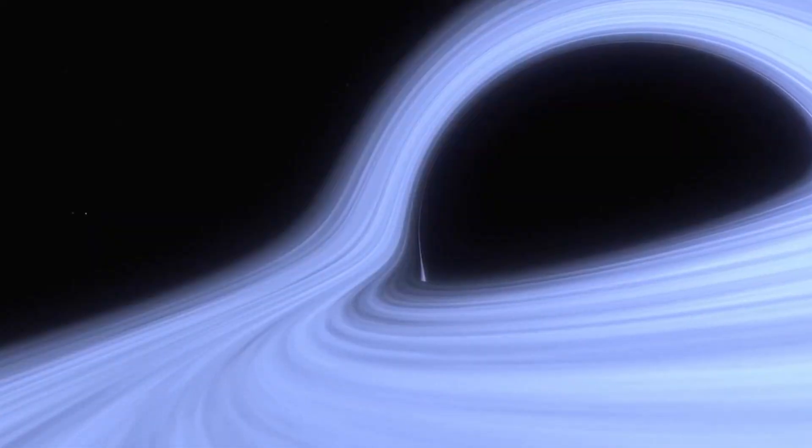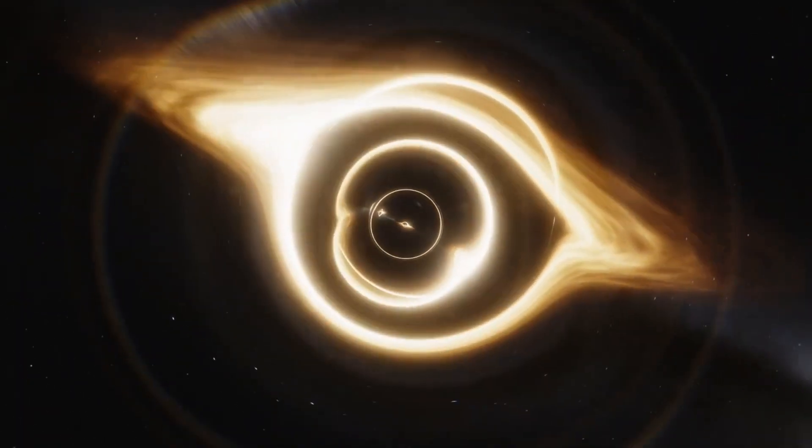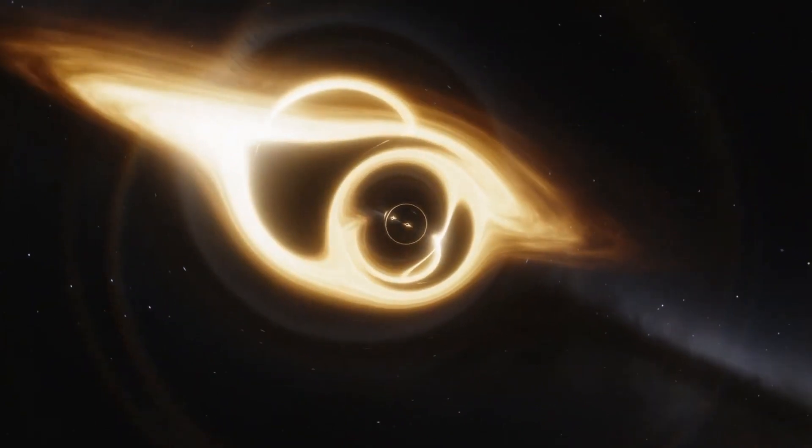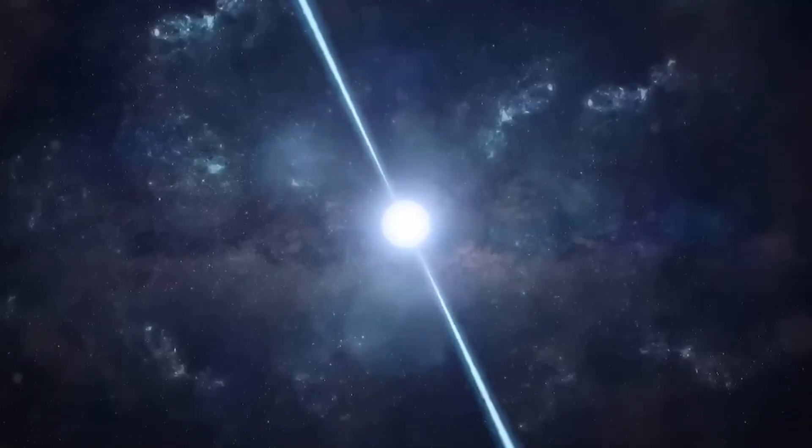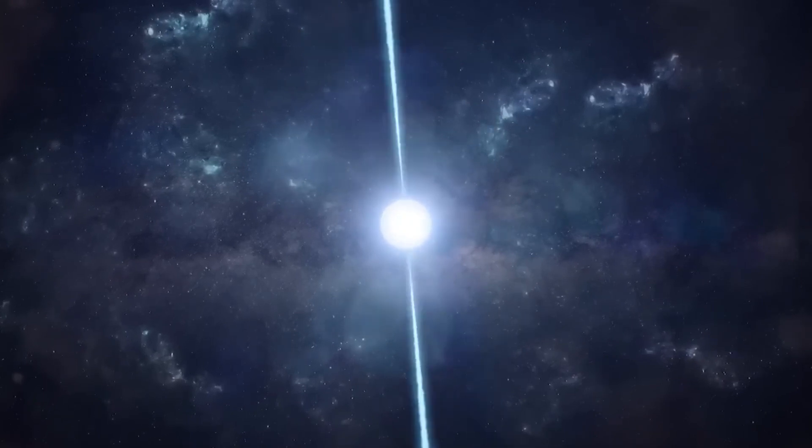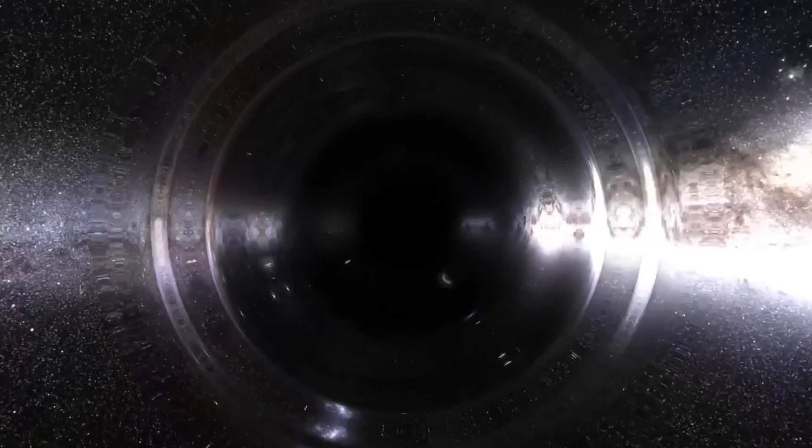How black holes form. Black holes have two primary formation pathways. First, stellar corpses, remnants of massive stars that exhaust their fuel and collapse, leaving behind a compact stellar mass black hole. Second, direct collapse of gases in the early universe, forming more massive black holes.